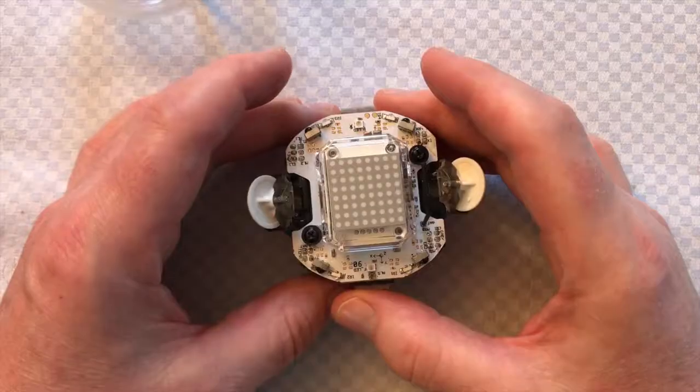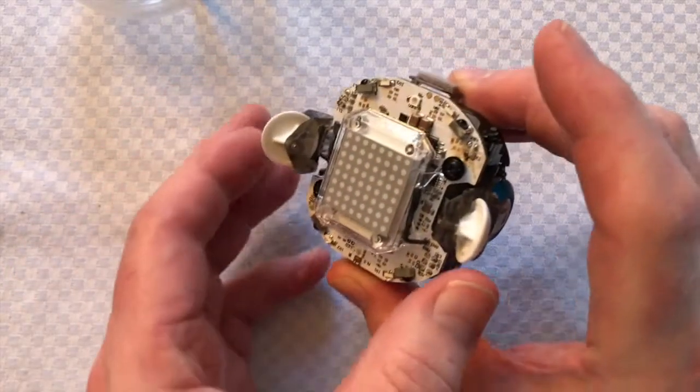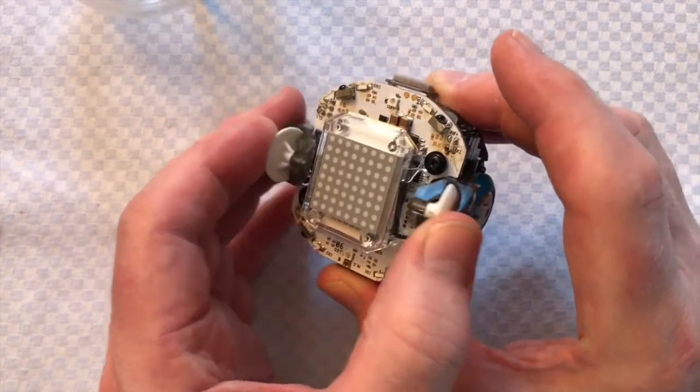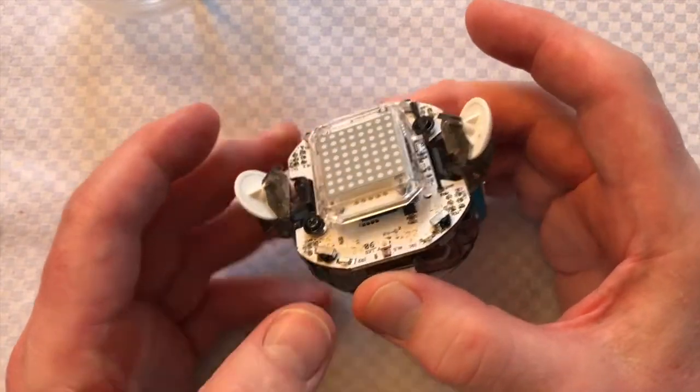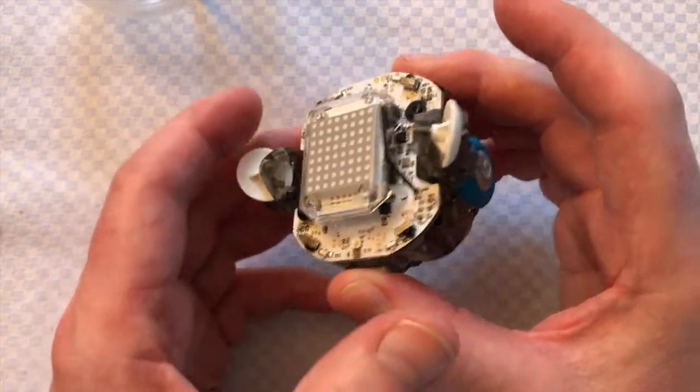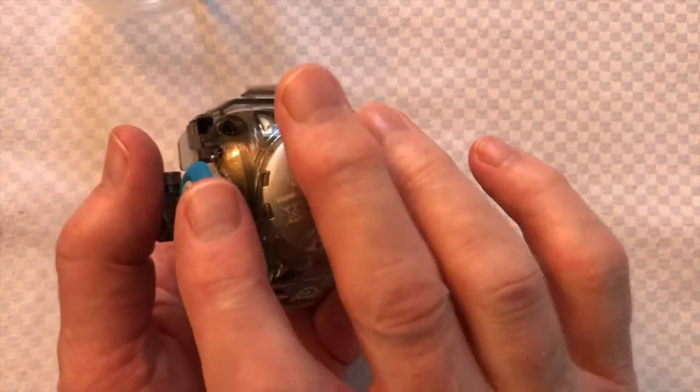So what does it consist of? On the top is this multi-LED panel. On the side are two side wheels which are sprung to allow the Sphero to spin and not move around too much inside the ball.